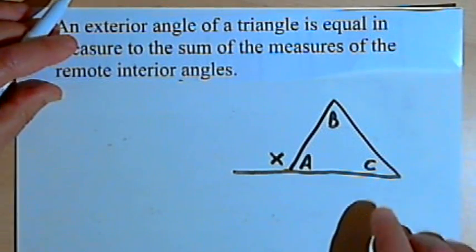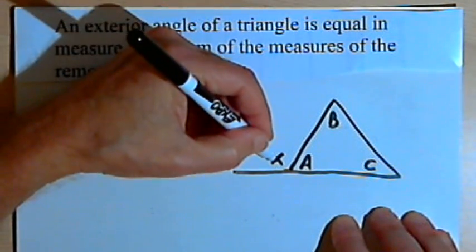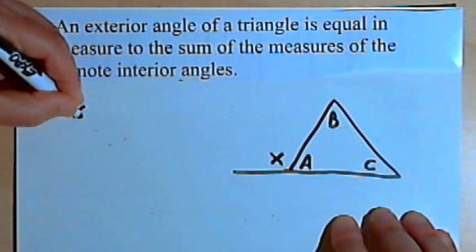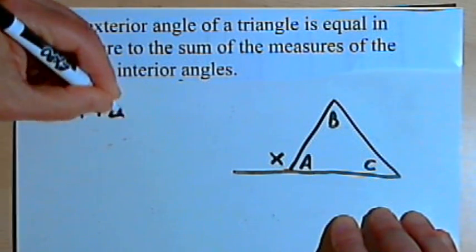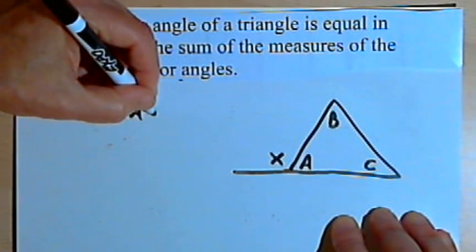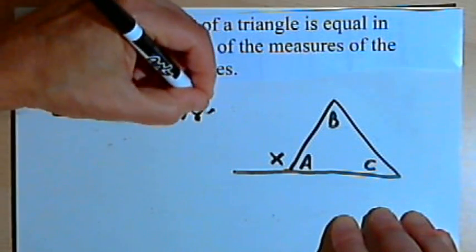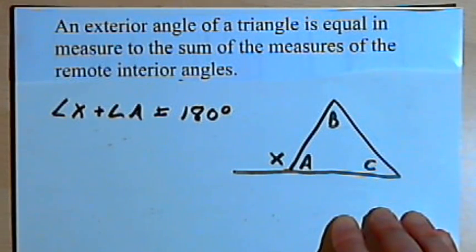We can prove that pretty easily. Angles x and a are supplementary angles. So the sum of those two angles, the sum of x plus a, angle x plus angle a, equals 180 degrees, because supplementary angles always add up to 180 degrees.